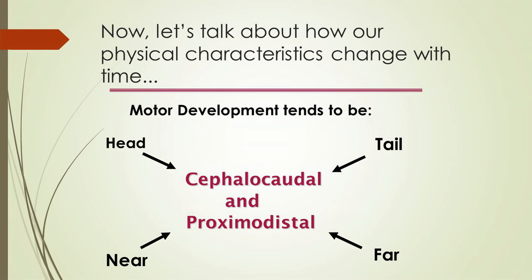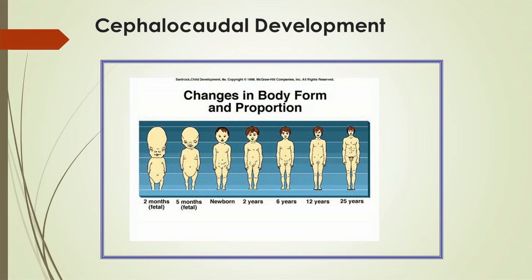The next slide shows an even clearer illustration of cephalocaudal development. Here you are looking at changes in body length as a function of age, beginning with a two-month-old fetus. Notice that the head size of this fetus is about half the body length. Then a few months in utero, the head size is about a third of the body's length, and in the newborn child the head size is about a quarter of the body length. This type of cephalocaudal, head-to-tail development continues as the individual develops and matures until about 25 years of age, when the head size relative to body length is no longer undergoing change.